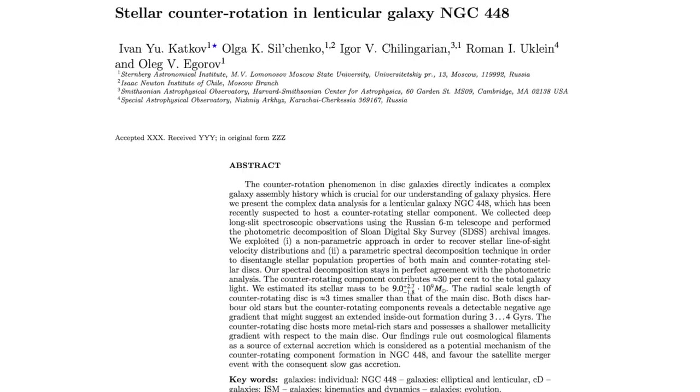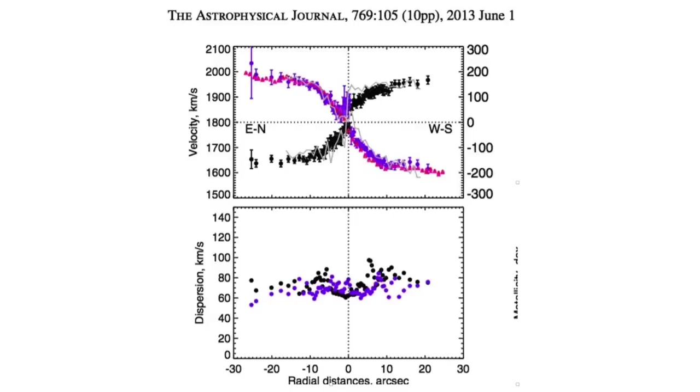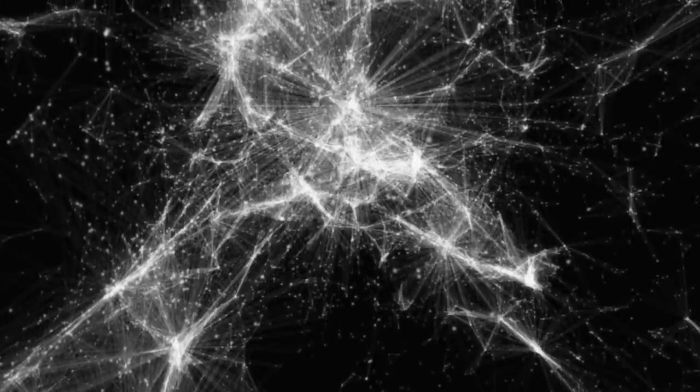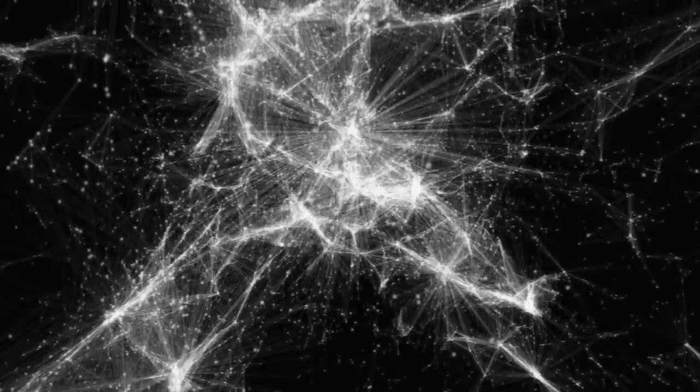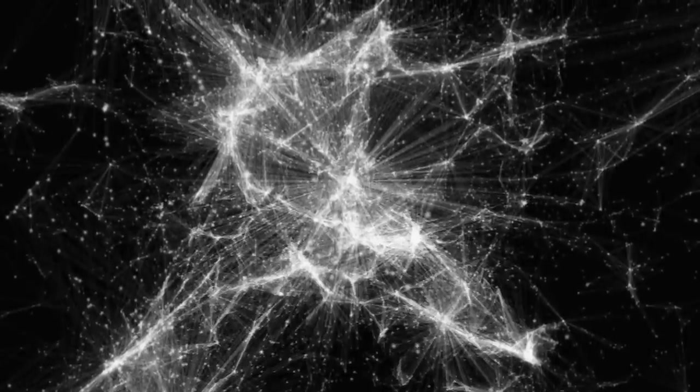The announcement of the discovery of counter-rotating stars in the faces of several spiral galaxies was even stronger evidence that I was headed in the right direction. In 2014, it was reported that a vast network of plasma filaments, Birkeland currents really, had been discovered.